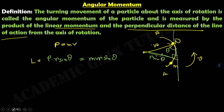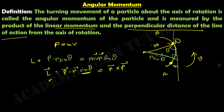So angular momentum L equals linear momentum P into perpendicular distance R sin theta, which gives M V R sin theta. Since angular momentum L is a vector quantity and both V and R are vector quantities, and there is a sin theta involved, we can write L as R cross P. This is the cross product of position vector and linear momentum, which is angular momentum.